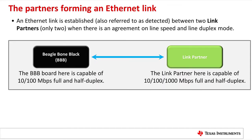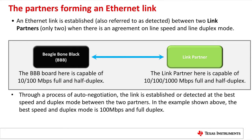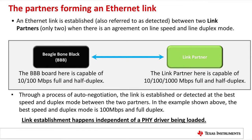The picture here is showing the connection between two link partners. On the left is a BeagleBone Black and on the right is a link partner. This link partner could be a switch, another BeagleBone Black, or a PC — any Ethernet-capable device. The BeagleBone Black is capable of 10/100 megabits in full and half duplex. Through a process called auto-negotiation the link would be established when they detect the best speed and duplex mode, in this example 100 megabits full duplex. This link establishment happens independent of any driver being loaded on either device — it happens typically when the PHY is brought out of reset and goes through the auto-negotiation process.